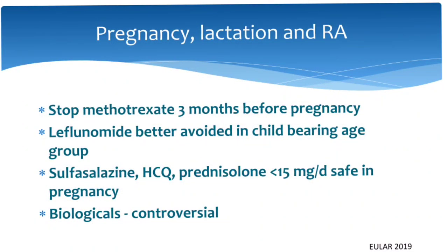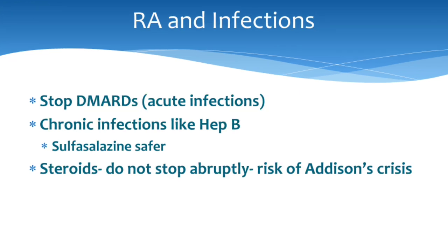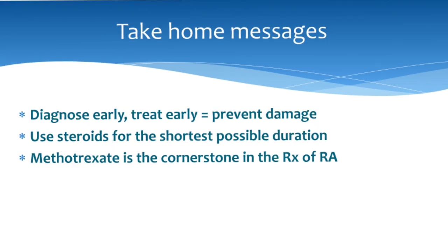Regarding pregnancy, lactation, and rheumatoid arthritis: stop methotrexate three months before conception. Leflunomide is better avoided in women of childbearing age. Sulfasalazine, hydroxychloroquine, and prednisolone less than 15 mg/day are safe in pregnancy. The role of biologics is controversial, but definitely avoid them in the first 12 weeks; after 13 weeks, etanercept and others have been used with good results. For infections: stop DMARDs during acute infections. In chronic infections like hepatitis B, sulfasalazine is safer. Do not stop steroids abruptly due to the risk of Addisonian crisis.